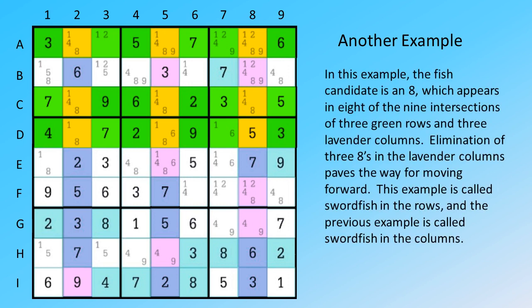In this example, the fish candidate is an eight, which appears in eight of the nine intersections of three green rows and three lavender columns. Elimination of three eights in the lavender columns paves the way for moving forward.